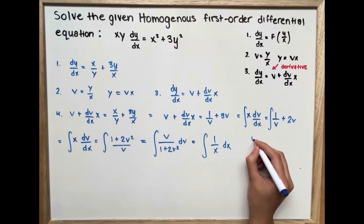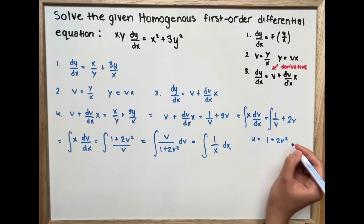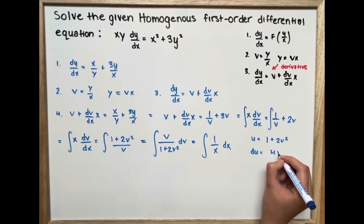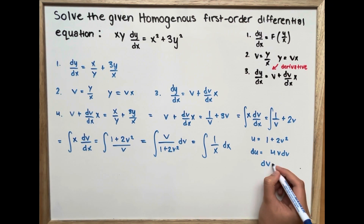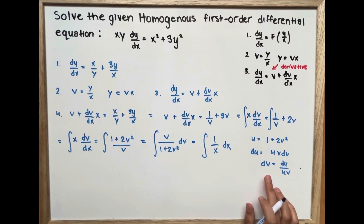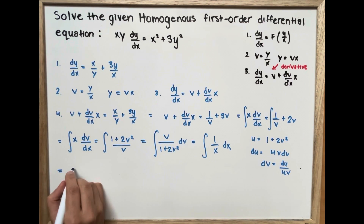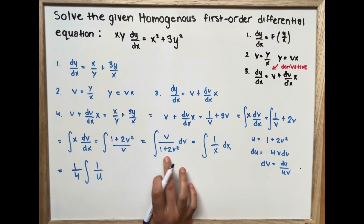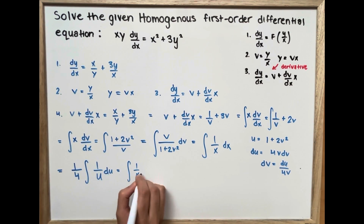We use u-substitution: set u equal to the denominator 1 plus 2v squared. Then du equals 4v dv, which we rewrite as dv equals du over 4v. Substituting in, we get one-fourth times the integral of 1 over u du equals the integral of 1 over x dx.